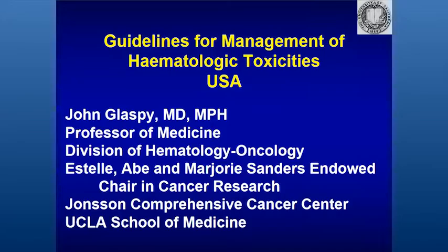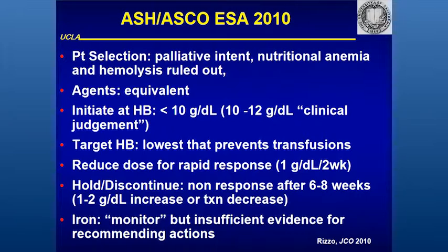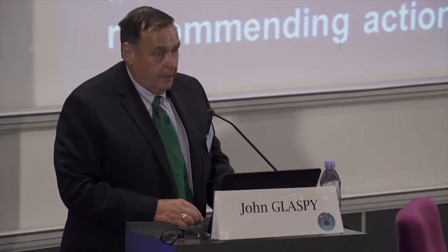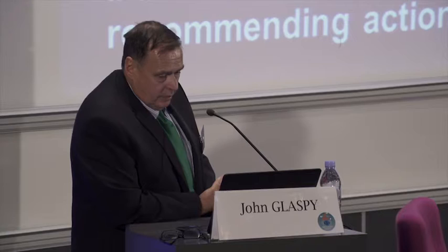The ASH and ASCO guidelines have traditionally been very slow, very conservative, and less helpful. This is the most recent iteration of the ASH and ASCO ESA guidelines. They recommend that patients be selected where palliation is the intent of treatment. That's a carryover from our government requiring that patients whose cancer is curable not receive ESAs — in other words, the drugs will not be paid for. There's not a good literature for that approach, but that's a carryover.